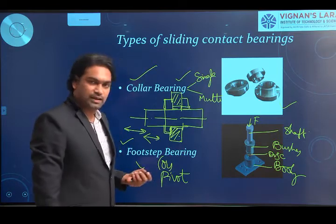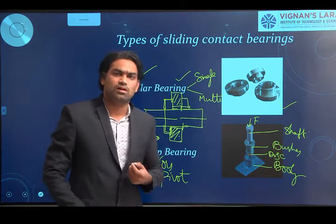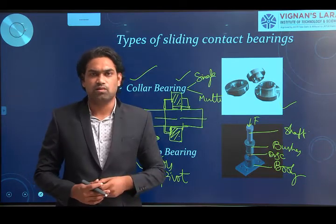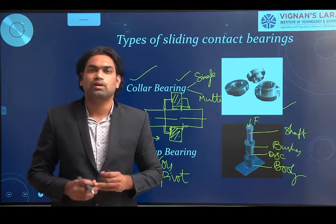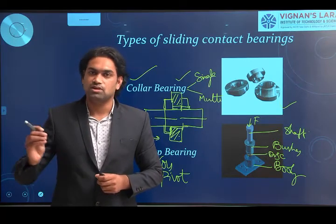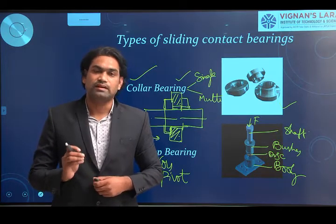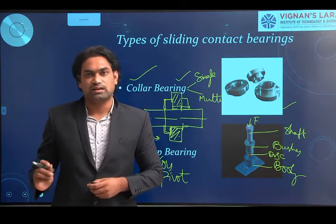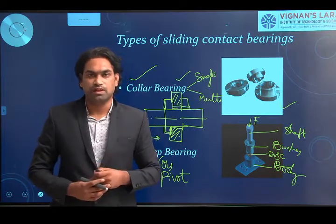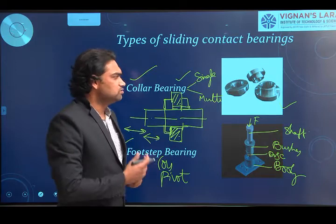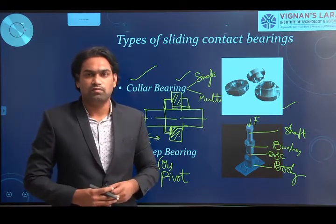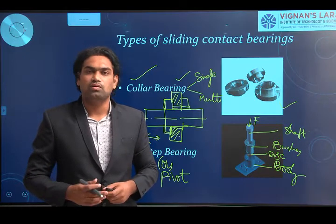The footstep/pivot bearing is mainly used for vertical type of shafts, though in some cases it can also be used for horizontal shafts. This is the basic classification of sliding contact bearings, but as per our syllabus, we are mainly focusing on sliding contact bearings subjected to radial loads — we are not considering collar bearings or footstep bearings, but for your knowledge you need to know the various types and their constructions.